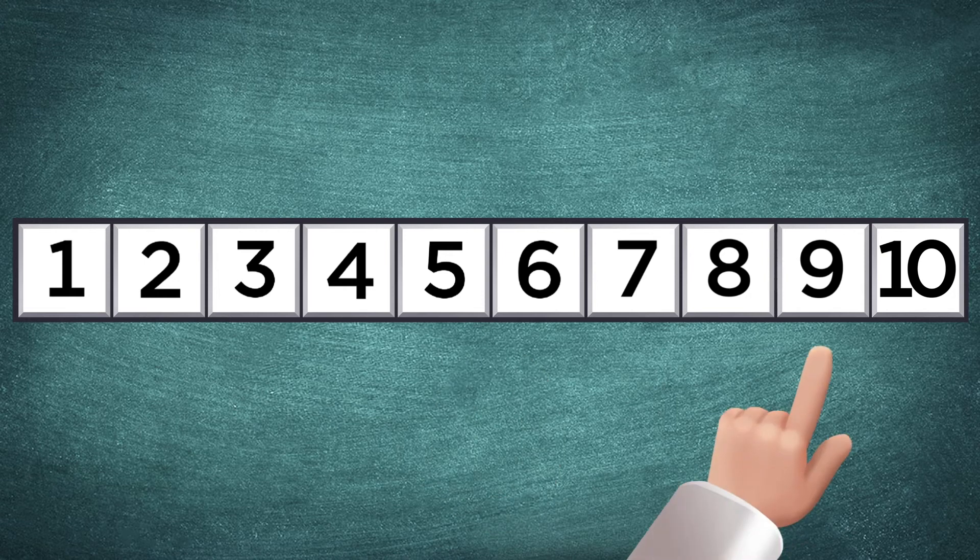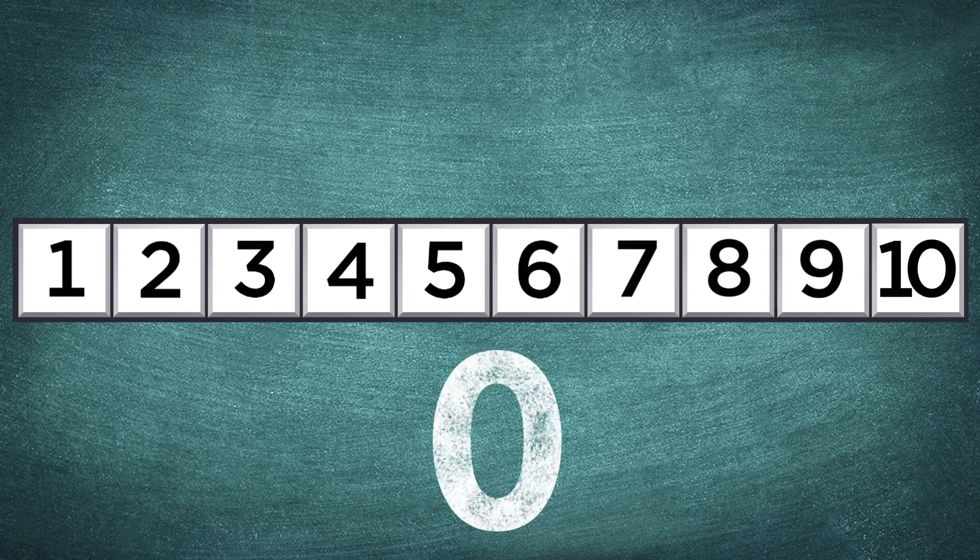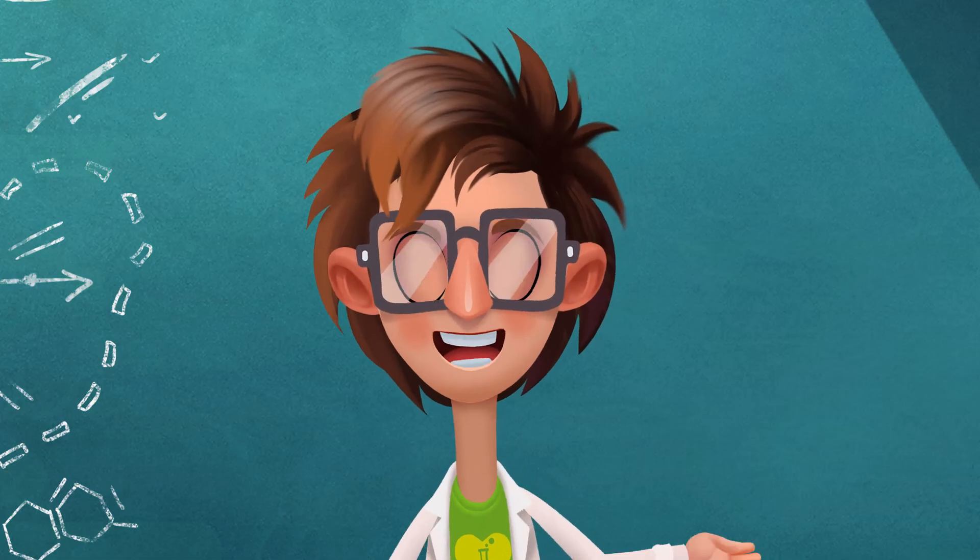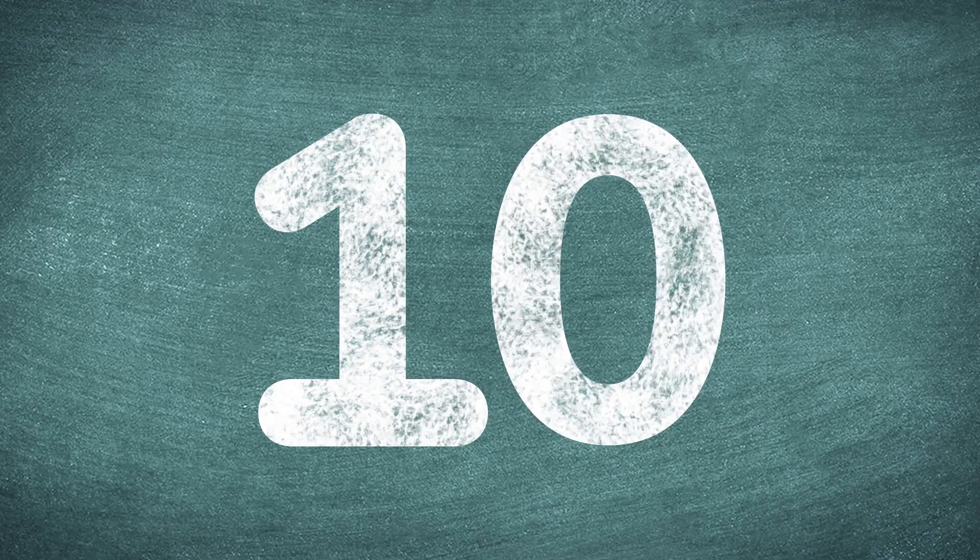After number nine, we go back to the number one, except this time we add a zero to its end. The number ten is made of two digits, one and zero.